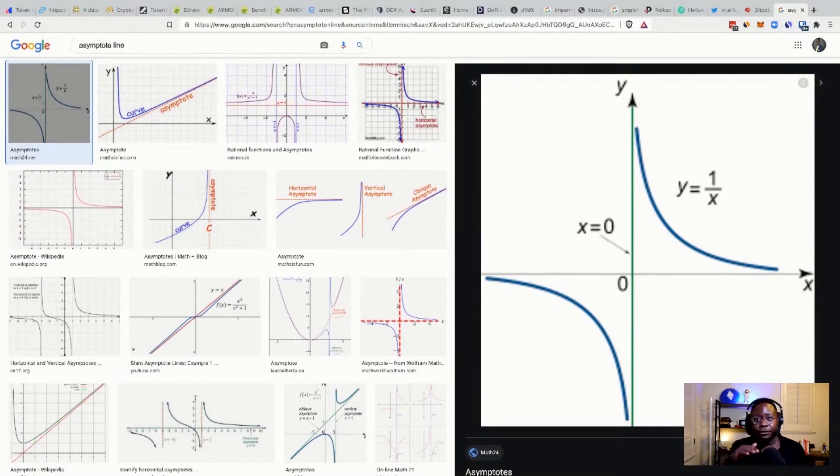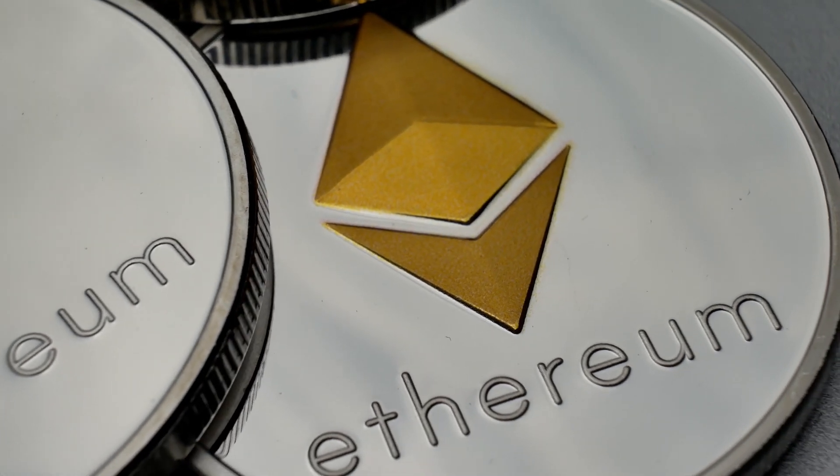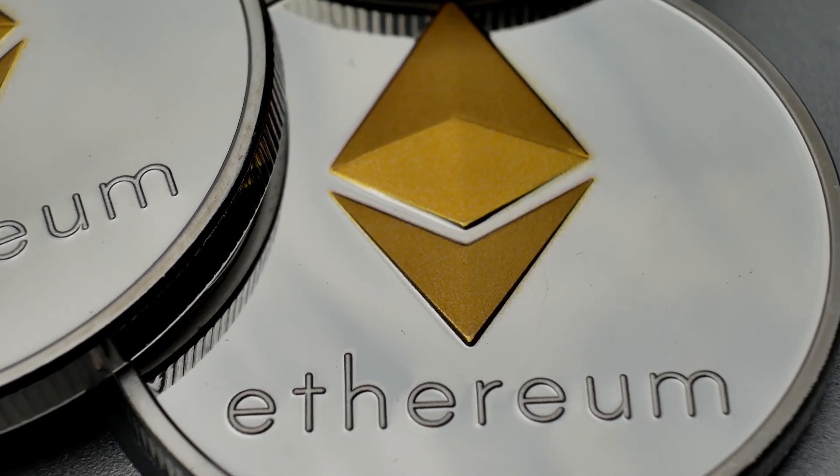And then you have fixed supply schedule, like EOS. EOS has, I believe, 4.5%. So every single year, annually, it's the same percentage. Now I think that's the worst because those projects just keep on printing tokens at the same level forever. And I think that that's probably why EOS may not be doing too well.